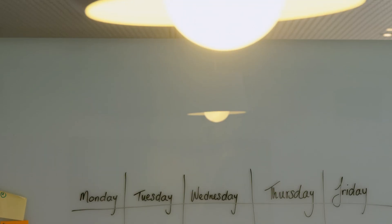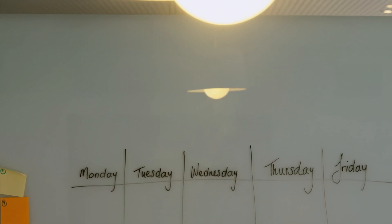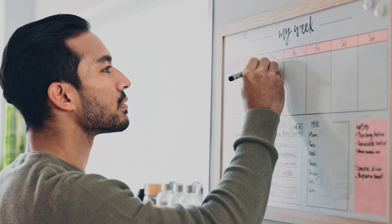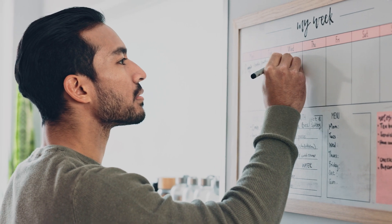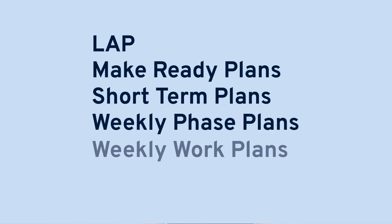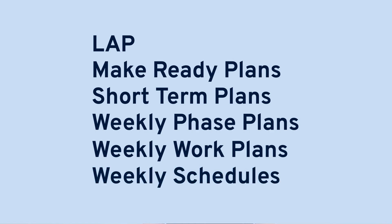There's a pretty good chance you've already been working with look-ahead plans, even if you're not familiar with the term. That's because there are loads of variations and names for look-ahead plans that are pretty much the same thing, just wrapped in a different label — a bit like walking down the own-brand aisle. Some popular terms include LAPs, make-ready plans, short-term plans, weekly phase plans, weekly work plans, or weekly schedules. If any of this sounds familiar, then good news — you've been in the world of look-ahead planning a lot longer than you might have thought.